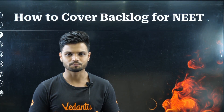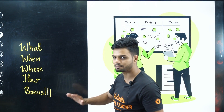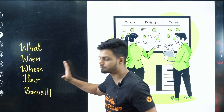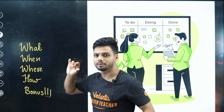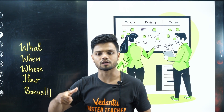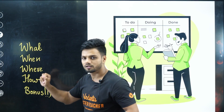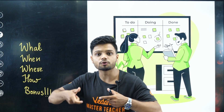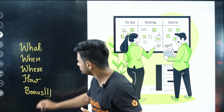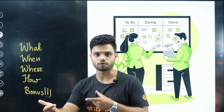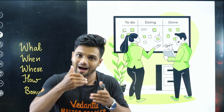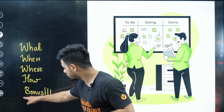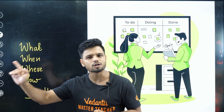Welcome to Vedantunate English. The entire video will be divided into four different segments: what, when, where, how, and a bonus. In 'what,' I will tell you what exactly is a backlog and what you need to do about it. In 'when,' there will be a timeline for how you're going to finish the backlog. 'Where' covers what and from where you need to study. 'How' covers the method to revise and clear backlogs. Watch till the very end for the important bonus tip.